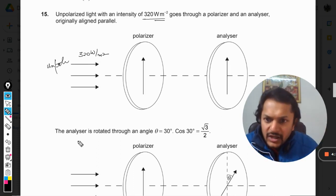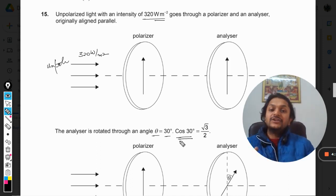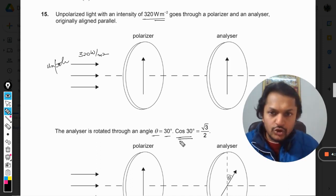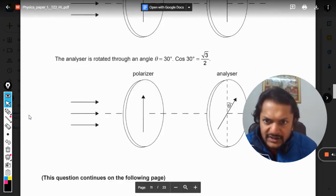The analyzer is now rotated through an angle theta, that is 30 degrees, and cos theta, that is cos 30, is also given to you. So let us first read the question properly. These are the given information.